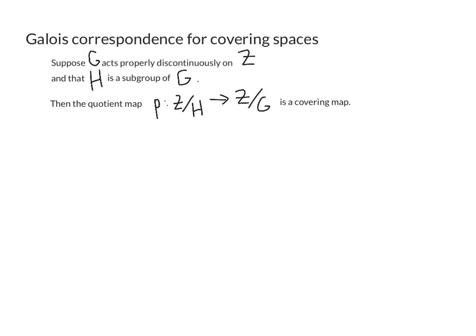Then the quotient map P that goes from Z mod H to Z mod G is a covering map. And again just to translate between earlier and now Z mod H is what we were calling Y and Z mod G is the original space X. So first of all let me write Z subscript H that is for the element Z considered as an element of the quotient Z mod H, and moreover let me write Z subscript G as the element Z considered in the quotient Z mod G. So this quotient map is P of Z subscript H equals Z subscript G.